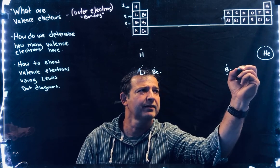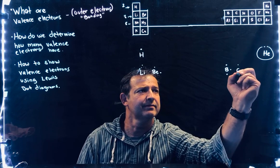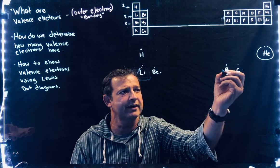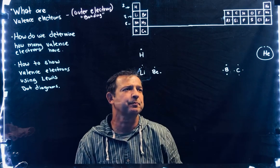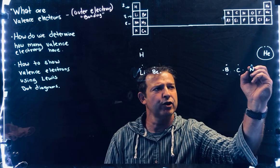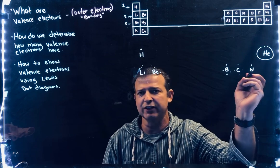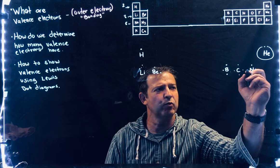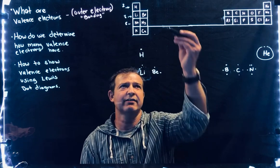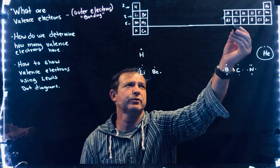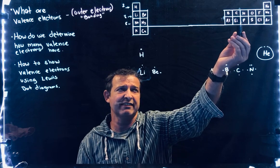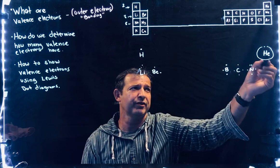Right next to boron is carbon — it's the fourth one in the row, so it has four valence electrons. Nitrogen has five valence electrons. It has seven total electrons with atomic number seven, so seven protons and seven electrons. The first two fill up the first orbital. With the Lewis dot diagram we're only looking at valence electrons, so we don't show the inner ones. Nitrogen has five dots going around.